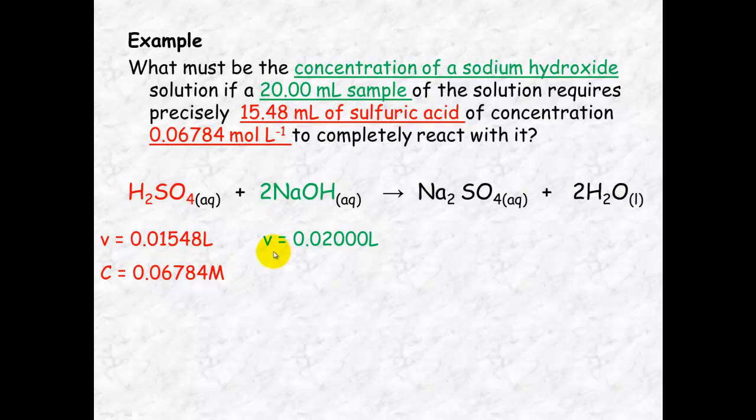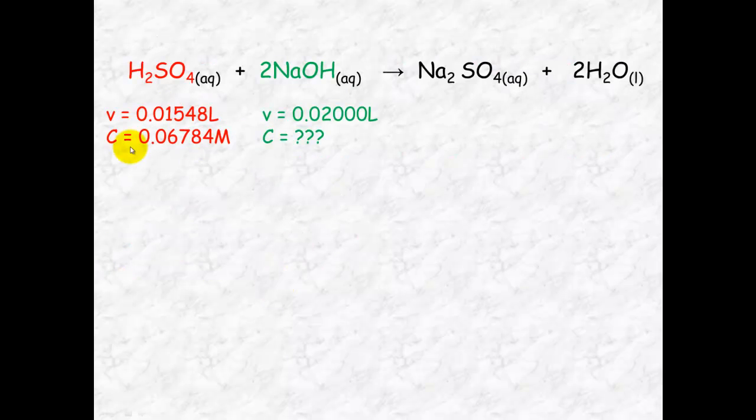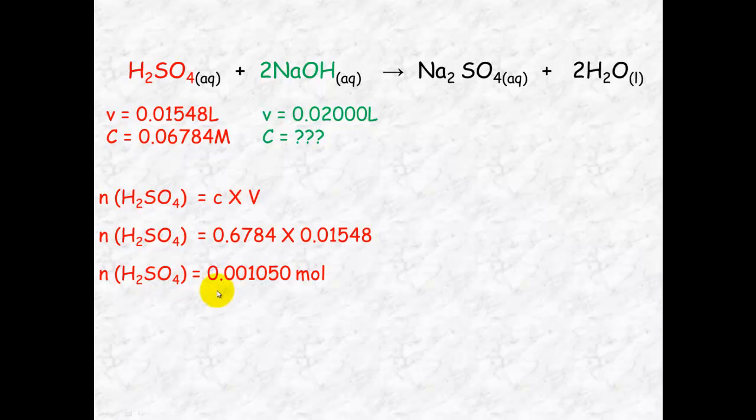The sodium hydroxide, we know the volume is 20 ml. Again, convert that to litres. And we're trying to work out the concentration. So with all of this information here, with C and V, we can now calculate the number of mole of sulfuric acid that reacts by multiplying concentration by volume. And we'll get an answer of 0.001050 mole.